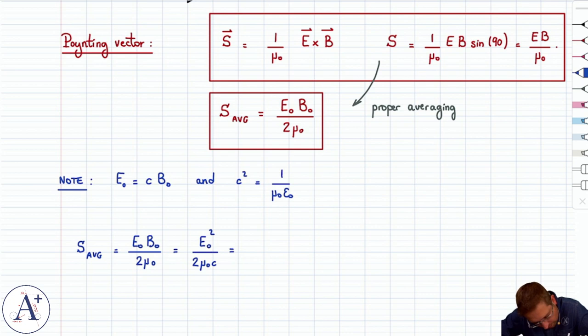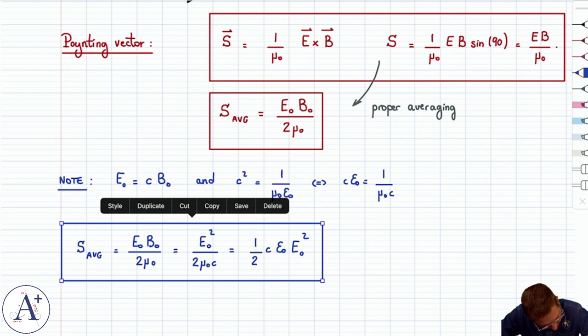And this is equivalent to 1 over μ₀C equals Cε₀. And so this is going to be one half Cε₀E₀². That is one version of the average intensity that is only a function of E₀, the magnitude of the electric field.